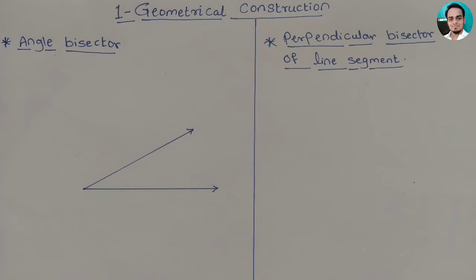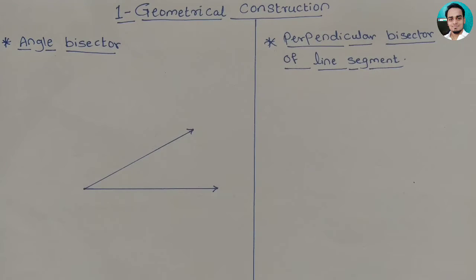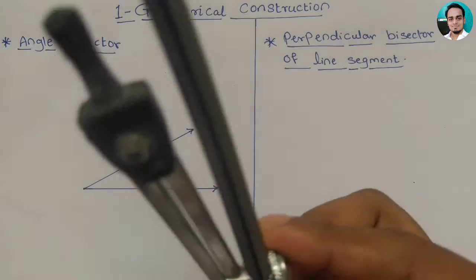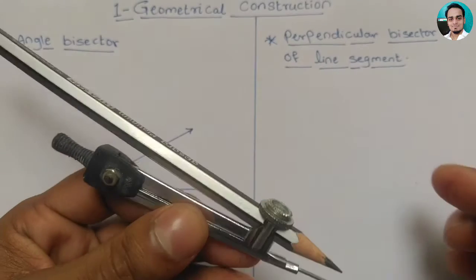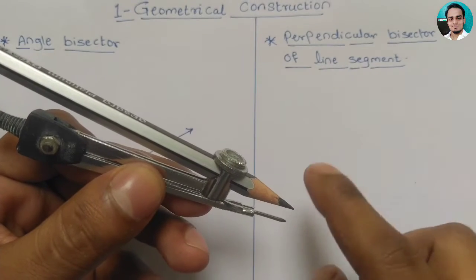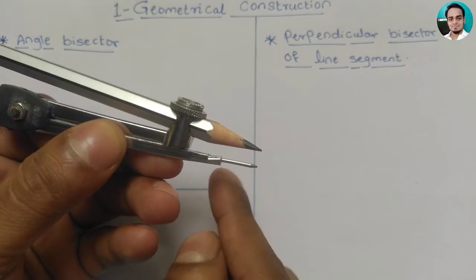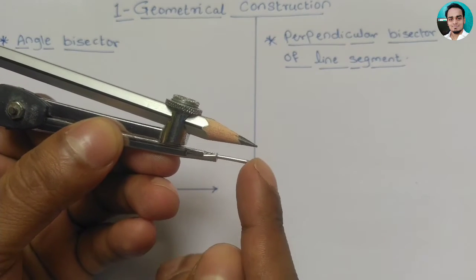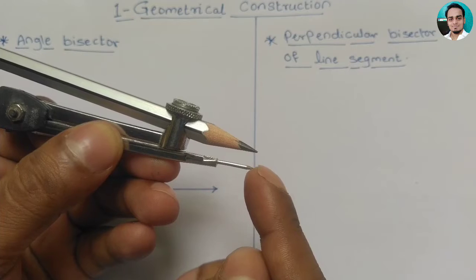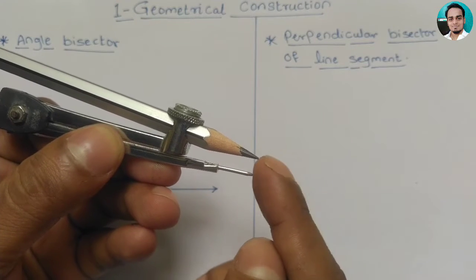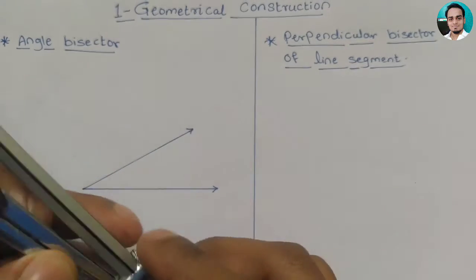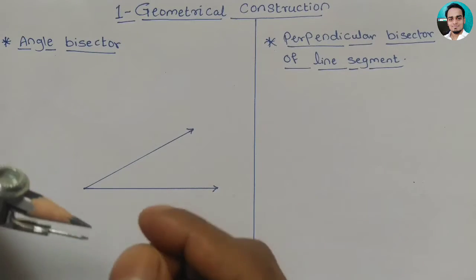Now we need to draw the angle bisector. We have an angle given but the measurement is not given. So we use a compass. We need to put a pencil in the compass and keep the pencil sharp so it matches exactly. We set a particular distance on the compass.